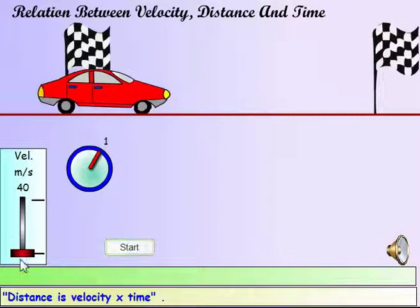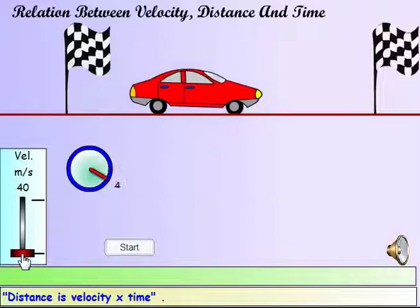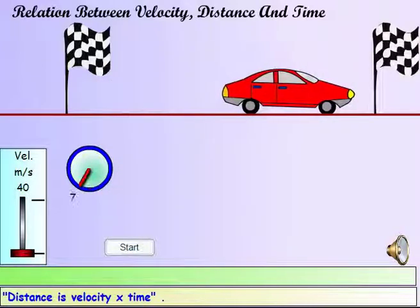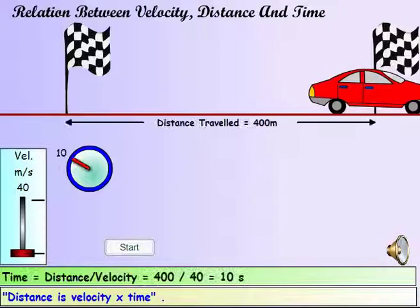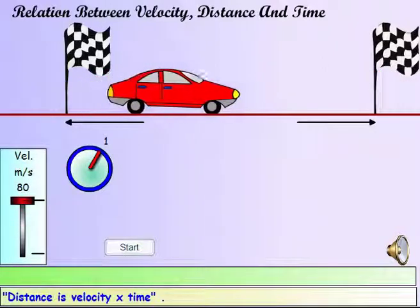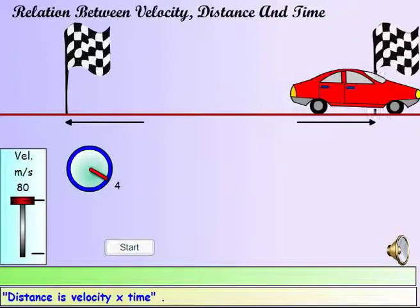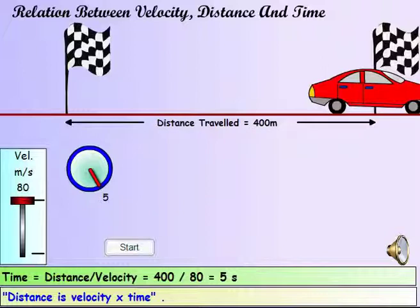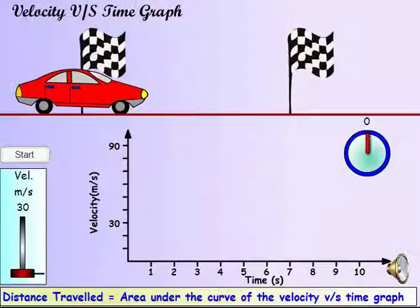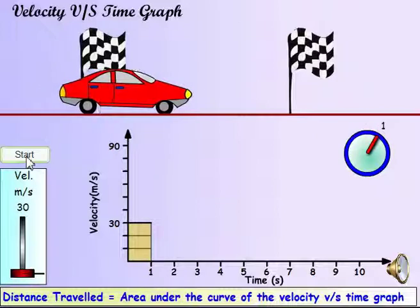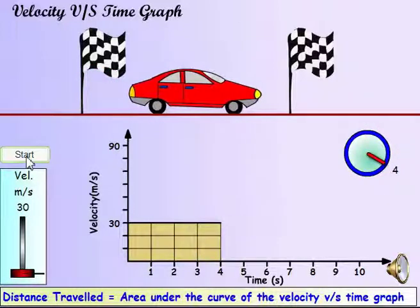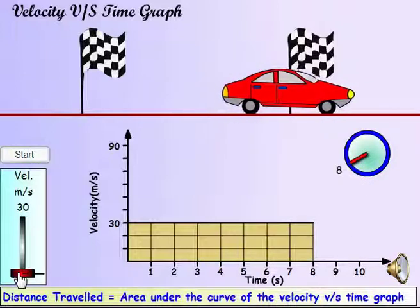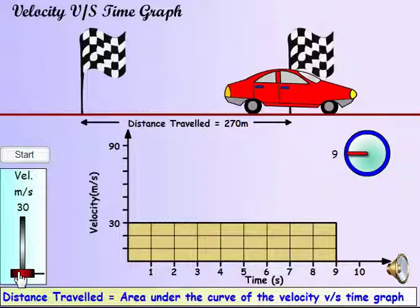Distance is the product of velocity and time. The faster the velocity, the less time it takes to cover the same distance. If the velocity-time graph is plotted, it reveals some interesting information. If you measure the area under the graph, you get the distance traveled by the car.